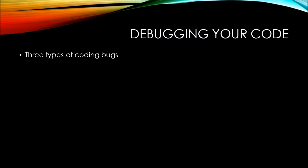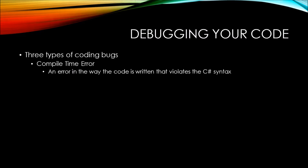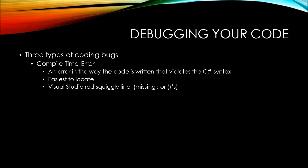There are three types of bugs that you'll have in your code. The first type of bug we'll talk about is the compile time error. The compile time error is an error in the way the code is written that violates the C# syntax. These are the easiest types of errors to locate, primarily because Visual Studio gives us the red squiggly line whenever there is a problem. For example, you may be missing a semicolon or the parentheses at the end of a method name.